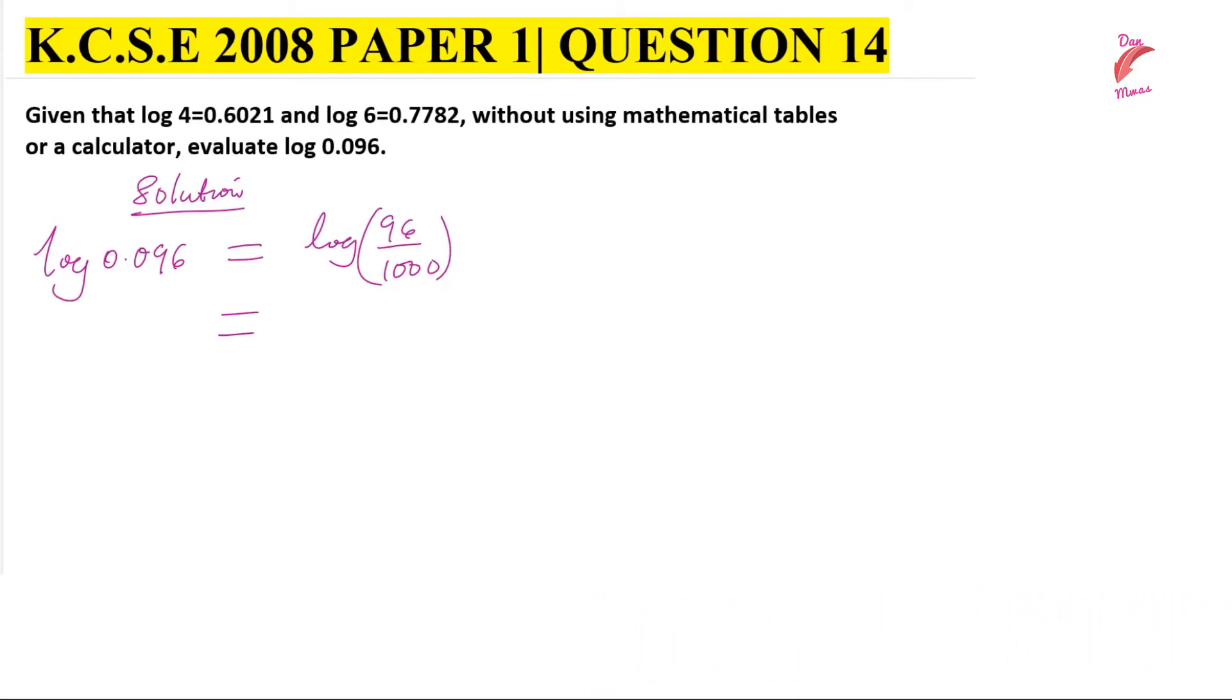The factors you're going to use should include 6 and 4. So 96 split will be 4 squared times 6, and we divide by 1000. From this stage, we'll recall some basic laws.